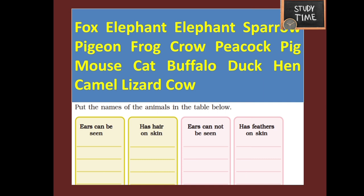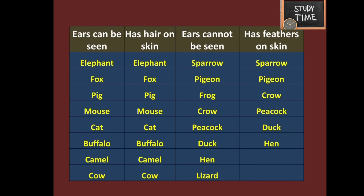We are going to arrange them in a tabular column. Animals whose ears can be seen: elephant, fox, pig, mouse, cat, buffalo, camel, and cow. These animals also have hair on their skin.